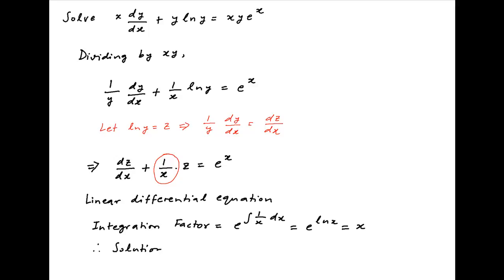Therefore the solution of the differential equation is z times the integrating factor x, equal to the integral of the integrating factor x times the right-hand side of the differential equation, which is e raised to the power x, dx, plus the constant of integration c.